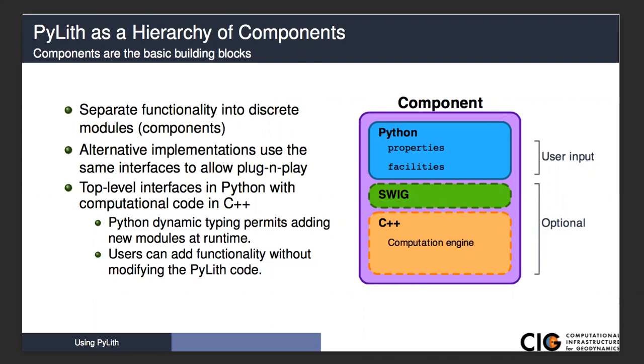In most of our components, PyLith is written at the very top level in Python, and we gather all user input via the parameter file, which is read in Python. It's a very flexible computing language that is very user-friendly, and allows us to do very high-level operations without a lot of code. It also has dynamic typing, so we can do swapping on-the-fly at runtime. However, Python is not very good for serious number crunching, so all of that is done in C and C++ at the computation engine level. The user does not interact with the C and C++, and we use a tool called SWIG to provide an interface directly between the C++ and the Python.